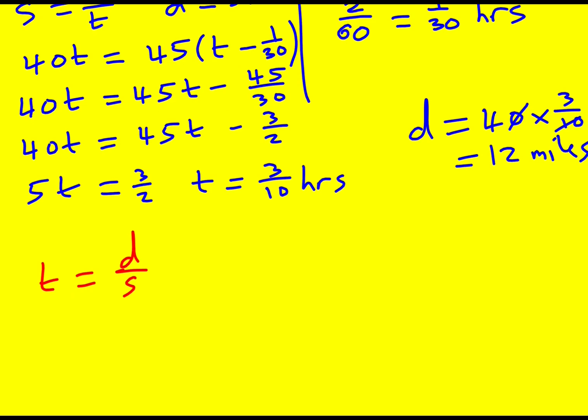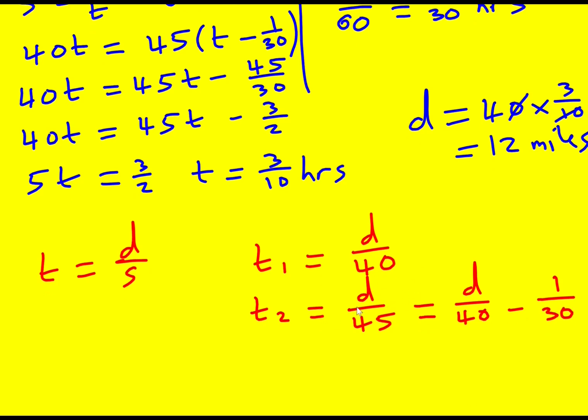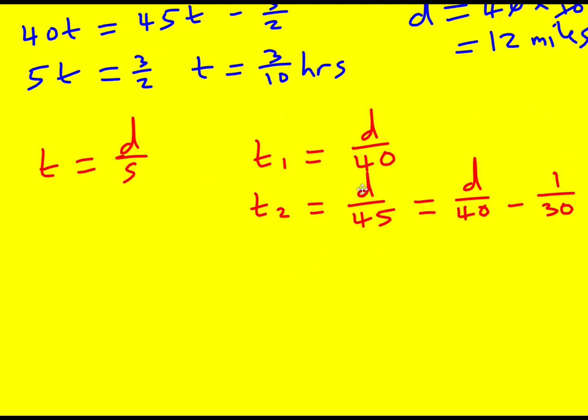And now we know that the time for the first journey, time one, is going to be the distance divided by 40. And then time two is going to be the distance divided by 45, but this remember is two minutes less. So it's going to be the time that it takes for the first journey minus this two minutes, or 1 over 30. I've written down that the first time is just the distance divided by the speed, and the second time is the distance divided by the new speed. But now I'm relating the two, saying that it's two minutes less, so it's going to be the first time, time one, minus this two minutes.